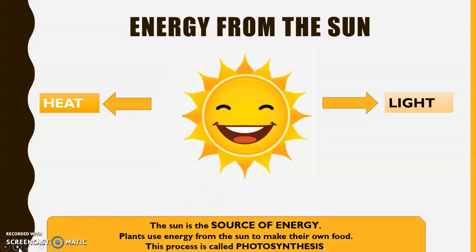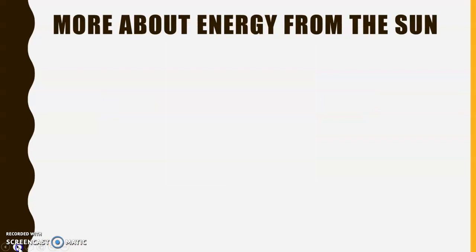The sun is the source of energy. Plants use the light energy from the sun to make their own food, and the process is called photosynthesis. Let's learn more about photosynthesis.